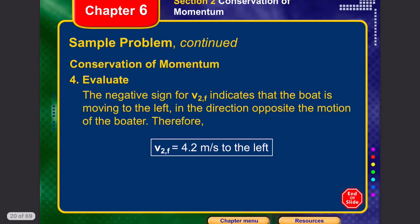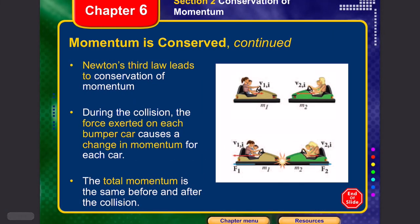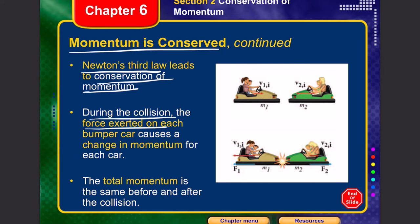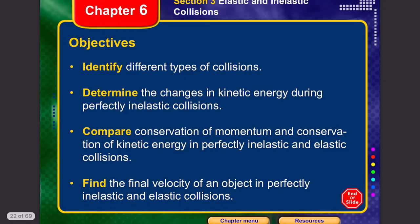Newton's third law generally leads to conservation of momentum. During a collision, the force exerted on each bumper car causes a change in momentum of each car, but the total change in momentum is the same before and after collision because there is an equal and opposite reaction force, so the total momentum is conserved.